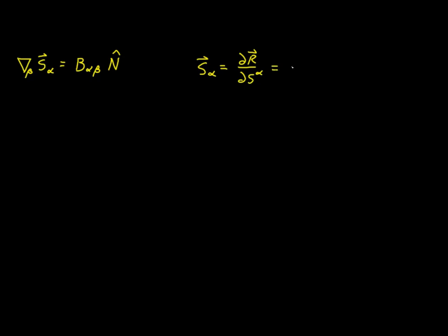This in turn is equal to the covariant derivative with respect to alpha of our position vector. This is true because R is an invariant expression — it has no free indexes. When we expand out a covariant derivative, we start by taking the partial derivative and then add a term with the Christoffel symbol for each of the free indexes. Since there are no free indexes, there are no terms with the Christoffel symbol. So the equality of the covariant derivative with the partial derivative is true of any object that has no free indexes — vectors, scalar functions, or any tensor that is fully contracted.